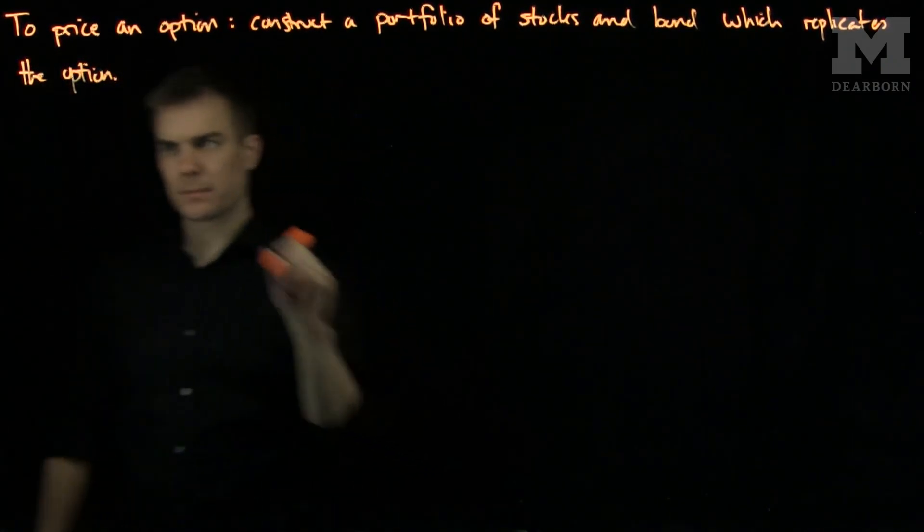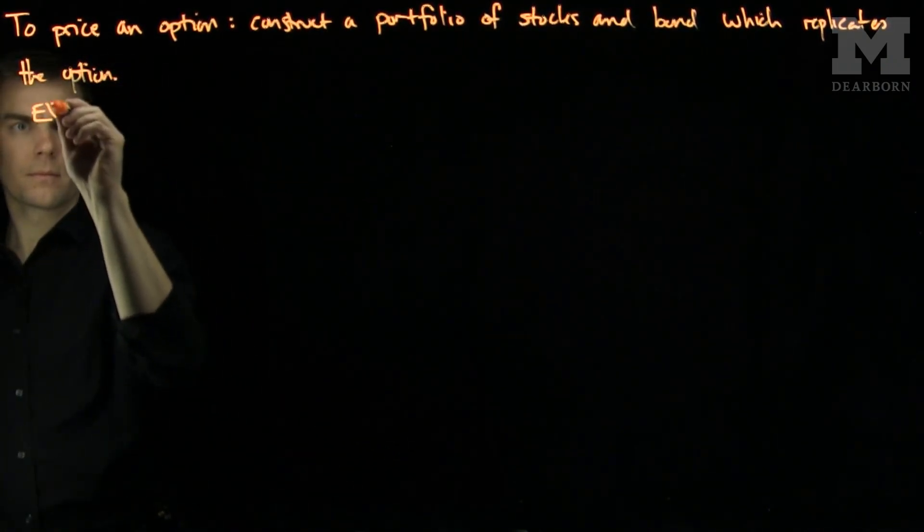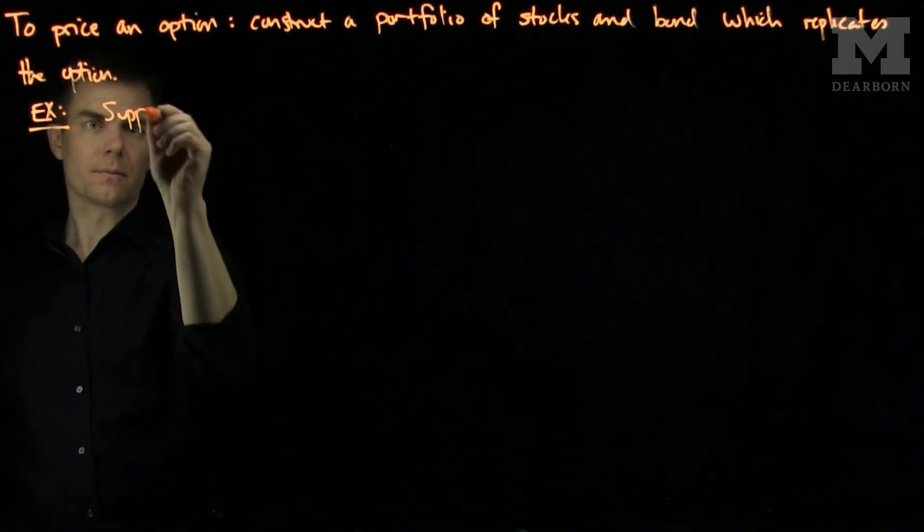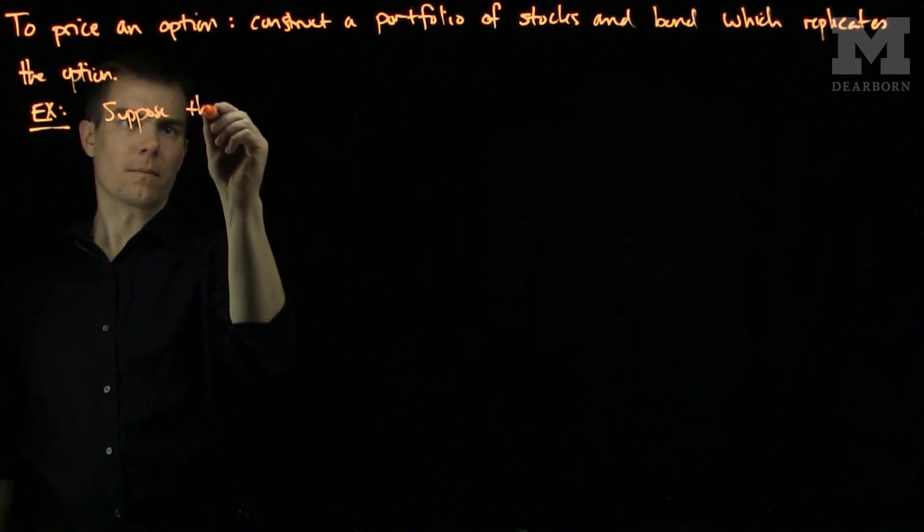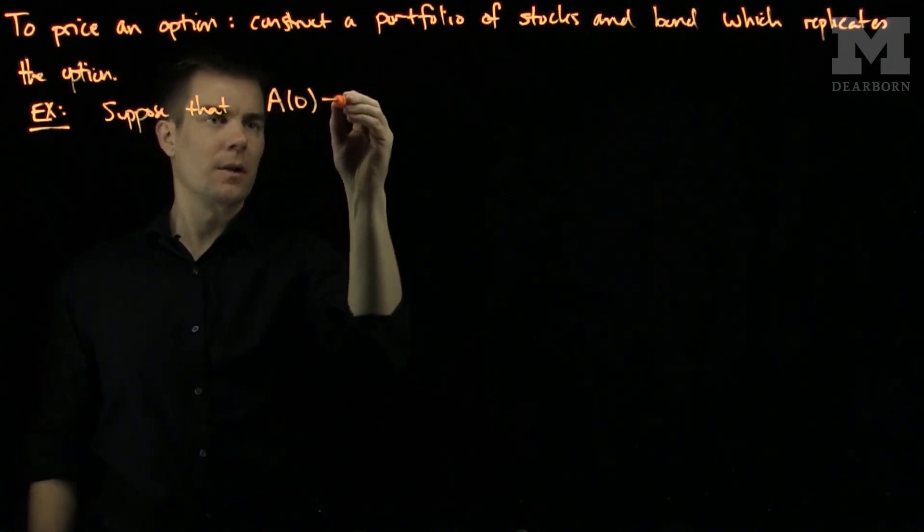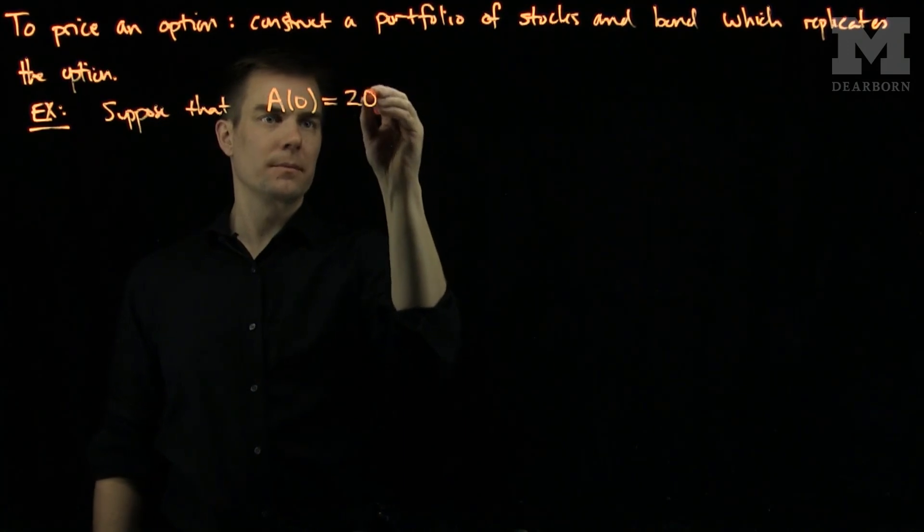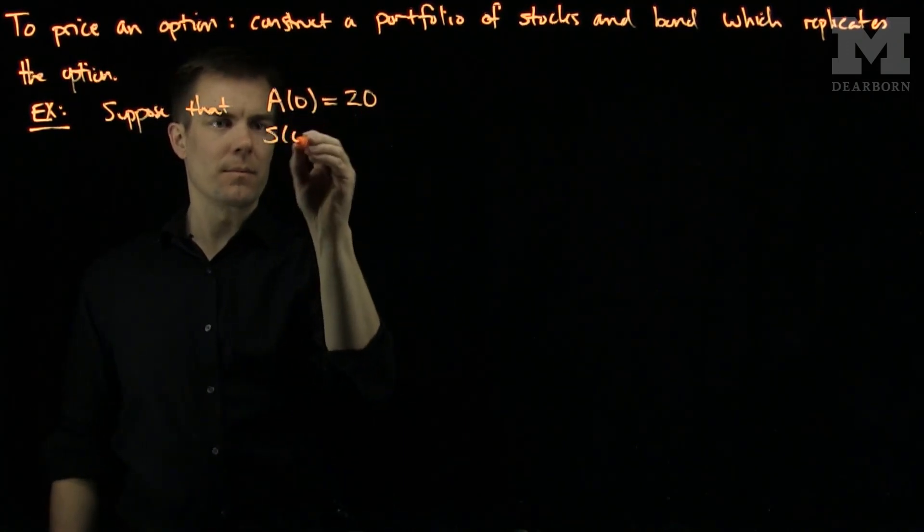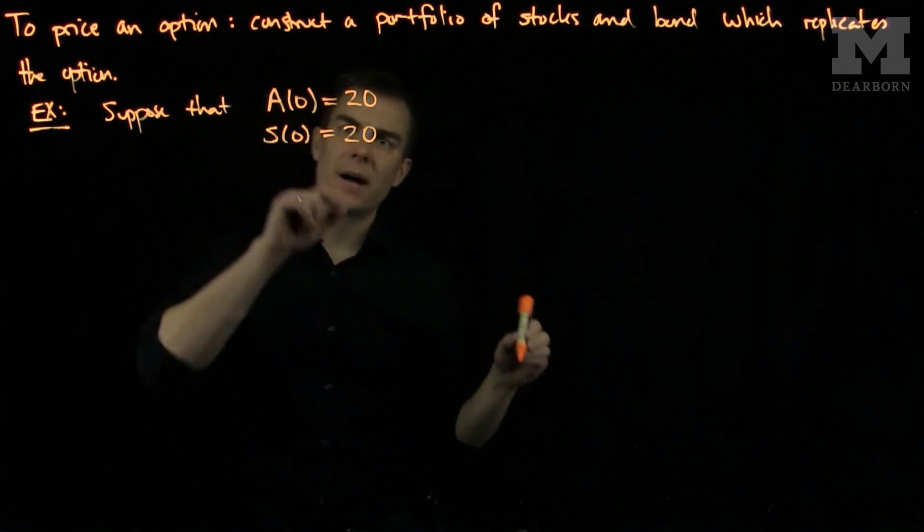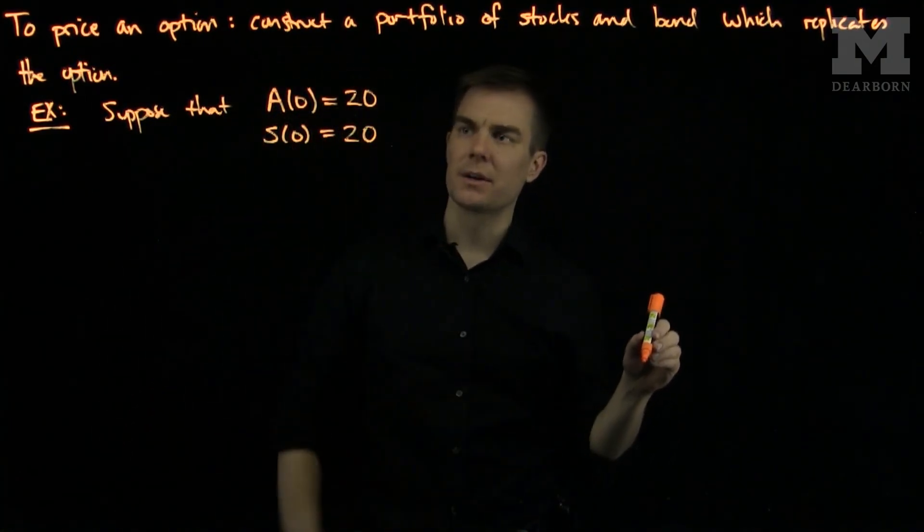So let's see an example of this. Let's suppose that A is equal to 20, S is equal to 20, so the price of a bond initially is 20 and the price of a stock initially is 20.